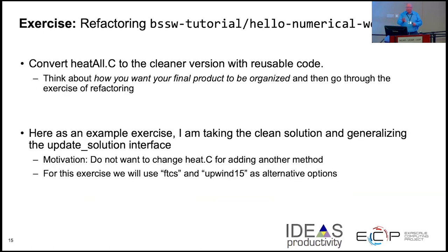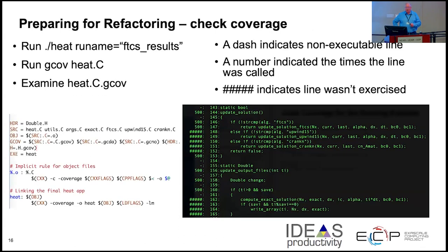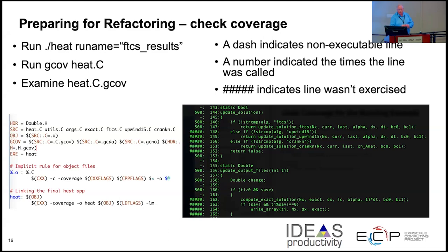Looking at the heat equation example, I'll point out the test coverage. This chart on the right shows code coverage: we ran a code coverage tool, and the column on the very left shows how many times each line of code was exercised in the run. Hash marks indicate code that wasn't exercised. Before undertaking a refactoring, you need to make sure your tests cover the parts of the code you intend to change. Some untested things may be okay; others may be gaps you need to deal with.